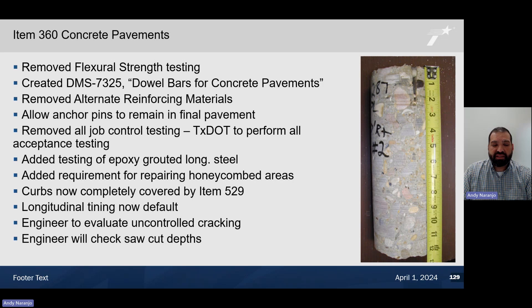As shown in the picture, here's an example of a concrete pavement where a 12-inch deep concrete pavement should have had a 4-inch deep saw cut. It only has about a 2.5-inch deep saw cut. This resulted in a long tunnel crack elsewhere in the pavement and not at the contraction saw cut joint. Therefore, we will now be verifying saw cut depth every 500 feet right after the saw cut or before the sealing operations, whichever is earliest.